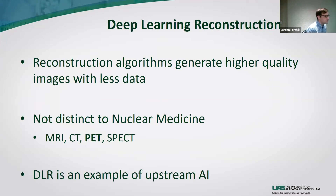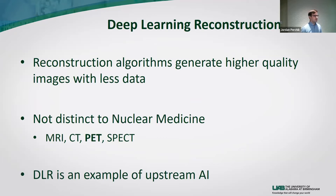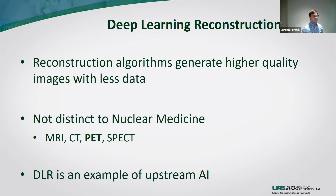Deep learning reconstruction, or DLR, is a topic we've touched on briefly in some of the other lectures. Briefly, this is a reconstruction algorithm that generates higher quality images from less data. When we speak about a study that uses less radiation being converted into a study of higher quality, or using less tracer into an image similar to one with more contrast — this is an example of how DLR can be applied. This concept is not distinct to nuclear medicine; it can be used in MRI and CT, but also has applications in PET and SPECT. DLR is an example of what is termed upstream AI.